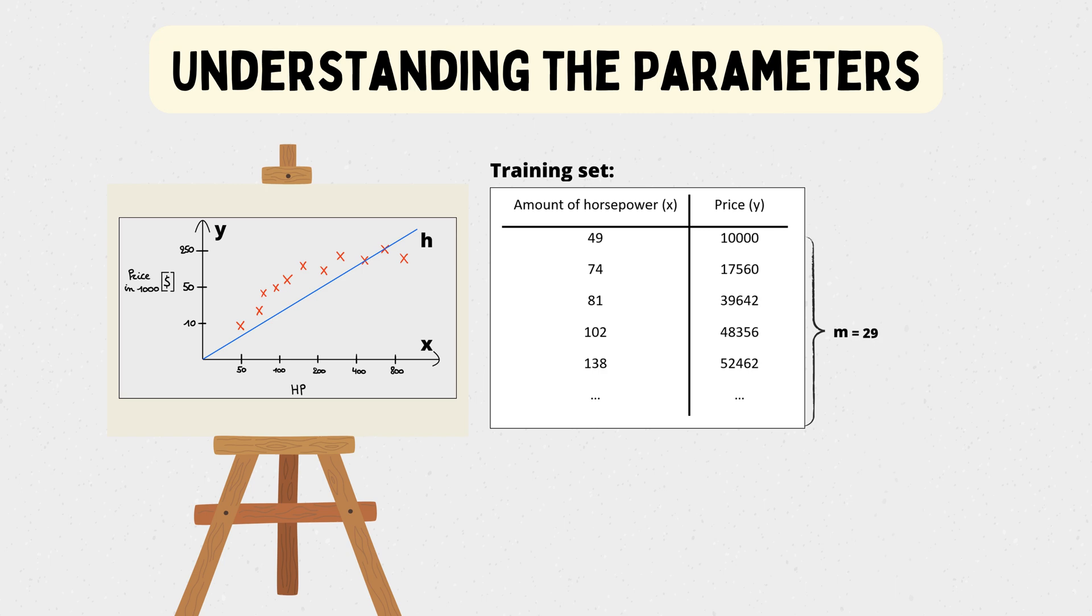Next we have x, which are the input variables or features that we're using to make predictions. In our case x consists of only one feature, namely the amount of horsepower. Later on we will see regression problems with multiple features.